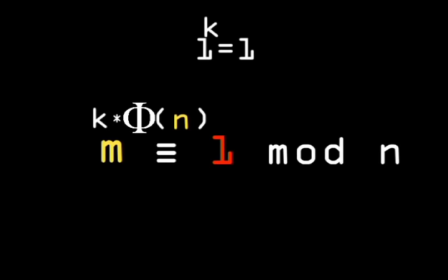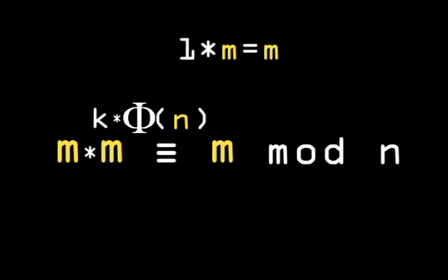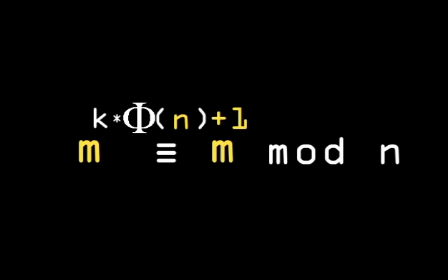Second, if you multiply 1 by any number, say m, it always equals m. In the same way, we can multiply the left side by m to get m on the right-hand side. And this can be simplified as m to the power of k times phi n plus 1.